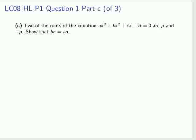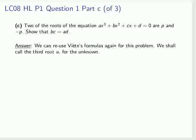We move on to Part C. We're told two roots of the equation are p and minus p. We're given the standard form of the cubic equation, and need to show that bc equals ad. We can reuse Viète's formulas again for this problem.